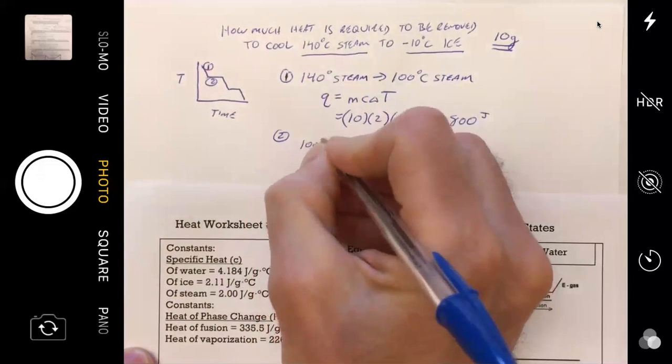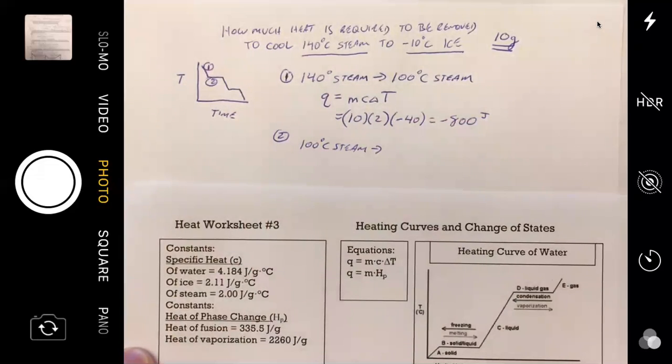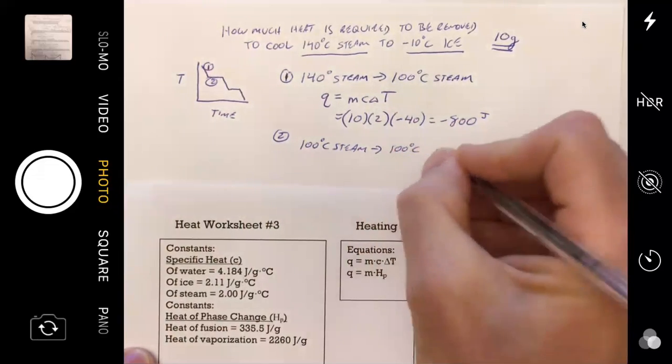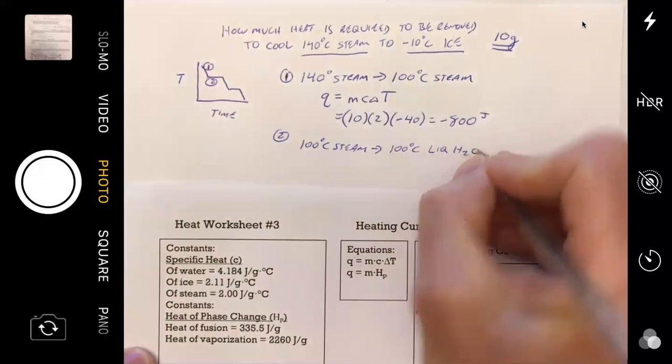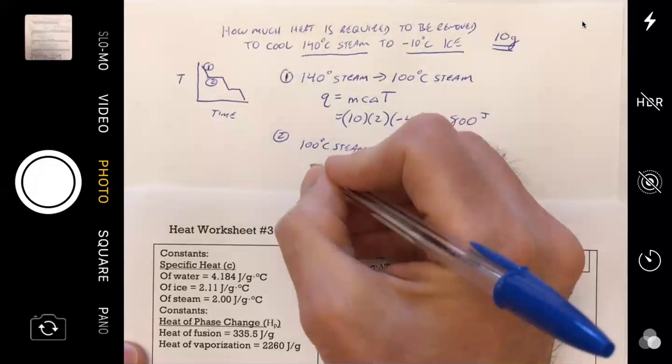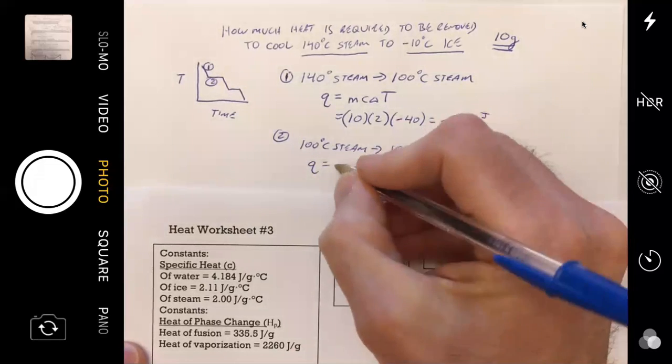We've got to take our 100 degrees Celsius steam. Julia, what's that 100 degree steam got to turn into? 100 degrees water. 100 degrees Celsius liquid water. And is that a temperature change or a phase change? Phase change. And I've got my two equations right here, so Julia which formula do we use? The M times H one.